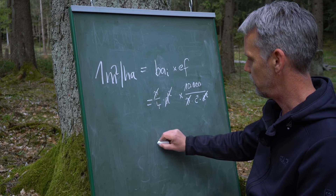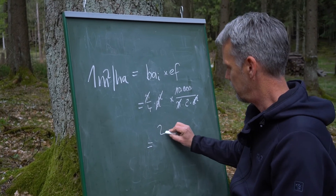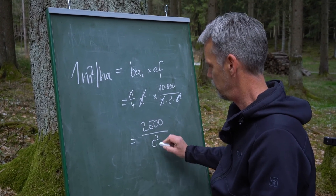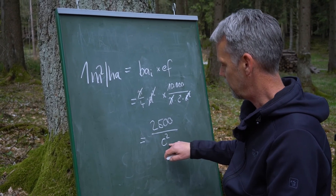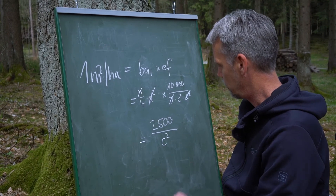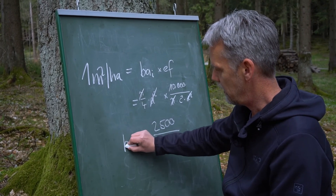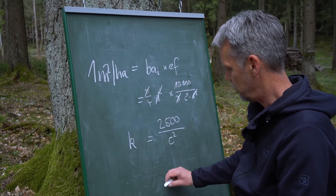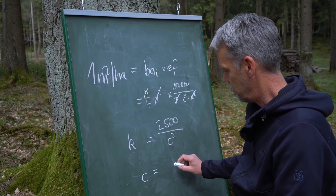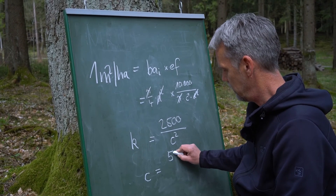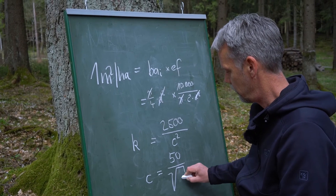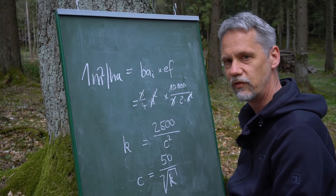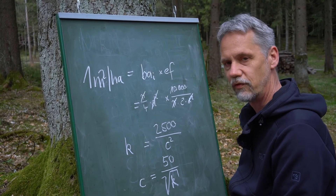The resulting equation is 2,500 divided by c squared, which equals k, the counting factor — in this case 1. This c is determined by the opening angle we are using. We can also solve for c: c equals 50 divided by the square root of the counting factor. Both forms are very helpful to calculate the critical distance or the counting factor for different opening angles.